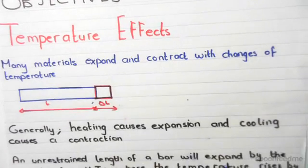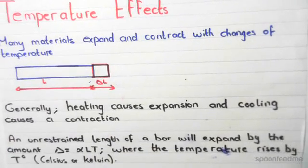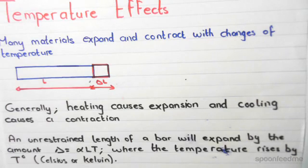For an unrestrained length, it will expand by the amount delta L equals alpha L T. That represents the extension or the expansion, where the temperature rises by T degrees. So it could be in Celsius or Kelvin.